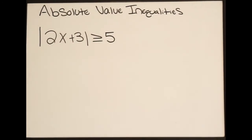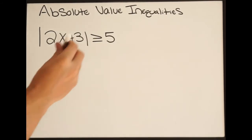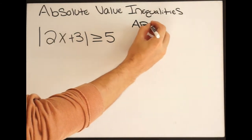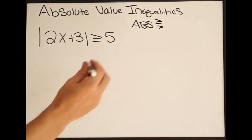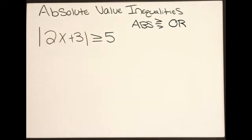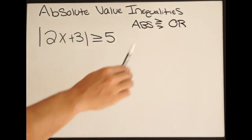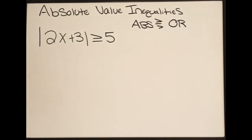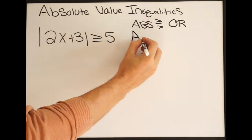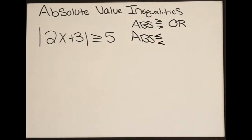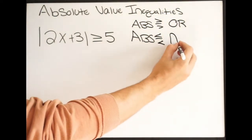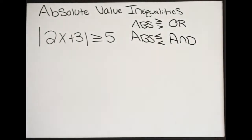In this video we're going to be talking about solving absolute value inequalities. Before we start, we need to know the following: if our absolute value is greater than or equal to, or greater than, we're going to use OR, meaning it's going to be a disjunction. If our absolute value is less than or equal to, or less than, then it's going to be a conjunction, meaning we're going to use AND as our separator.